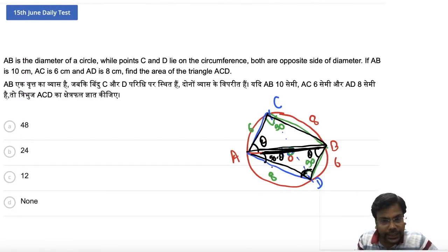If you are at theta here, this angle is 90 degrees because the diameter is made. So this angle will be 90 minus theta. So can I say what is angle CAB? This is theta, this is 90 minus theta. So the angle is nothing but 90 degrees.